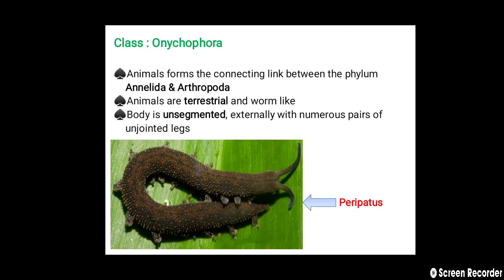The first class, Onycophora: these animals form the connecting link between phylum Annelida and Arthropoda. Animals are terrestrial and worm-like. The body is unsegmented externally with numerous pairs of unjointed legs. Example is Peripatus.